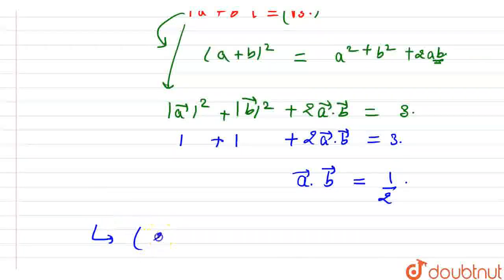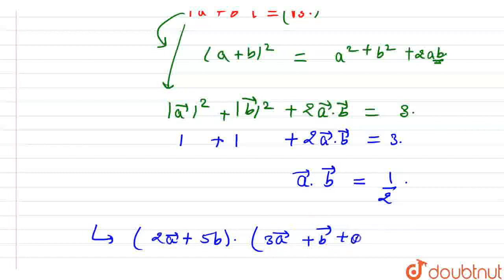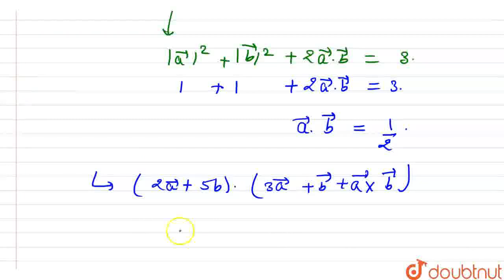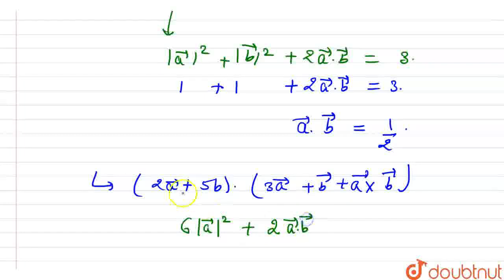So in this part, we find the value of 2A vector plus 5V vector, dot product with 3A vector plus V vector plus A cross V vector. Multiplying 2A by 3A gives 6 times modulus of A vector squared. Multiplying 2A by V vector gives 2 times A vector dot V vector. Multiplying 2A by A cross V vector gives 2 times A vector dot (A vector cross V vector).